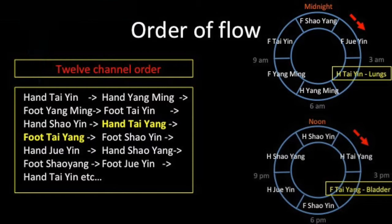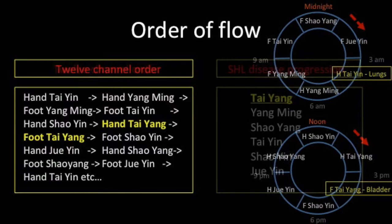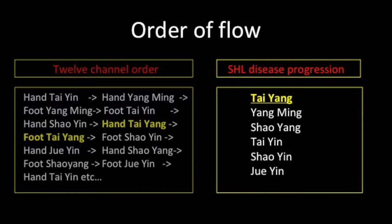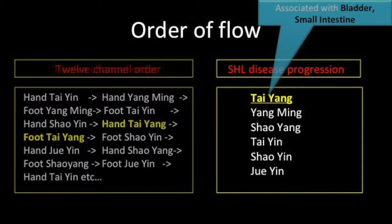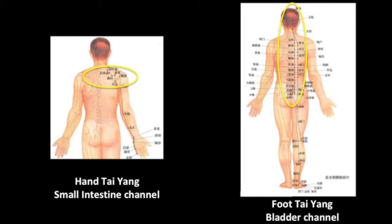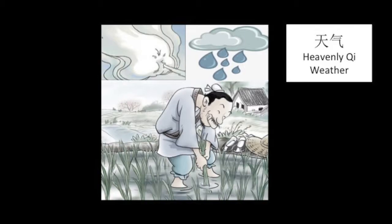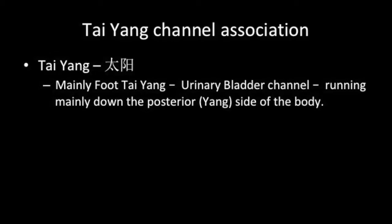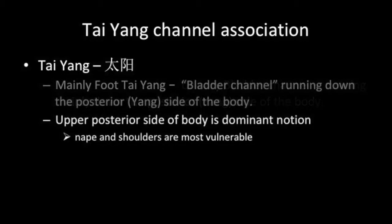The Shang Han Lun comments on the prognosis of disease with respect to these time periods. The order of disease progression, as presented in the Shang Han Lun, starts with the Taiyang channel and follows pathogenic action from outside to inside, the body at first offering a strong response which is gradually overwhelmed. The hand Taiyang or small intestine channel identifies seven acupuncture points on the upper back, while the foot Taiyang or urinary bladder channel has over 30 points on the entire back. In the Shang Han Lun, Taiyang problems are mainly associated with the foot Taiyang channel, and the dominant notion is an exposure of the nape and shoulders to inclement elements.